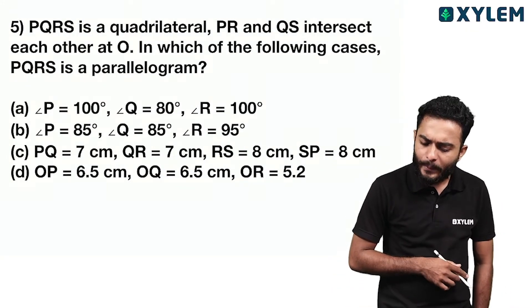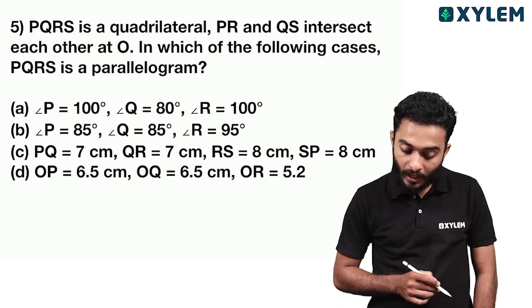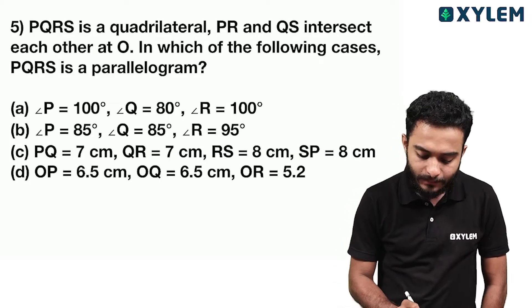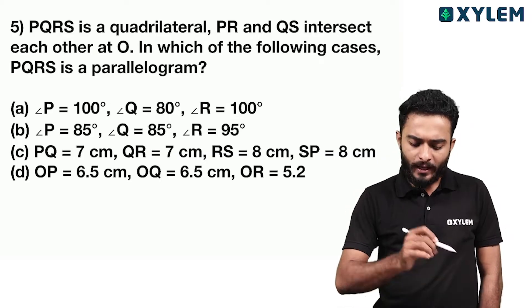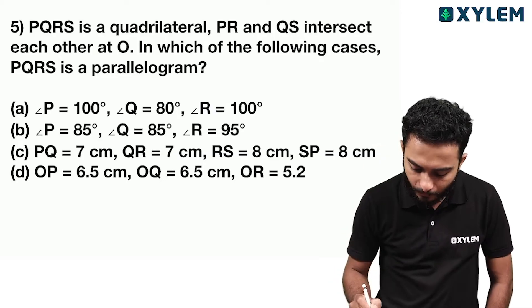PQRS is a quadrilateral. PR and QS intersect each other. In which of the following cases is PQRS a parallelogram?